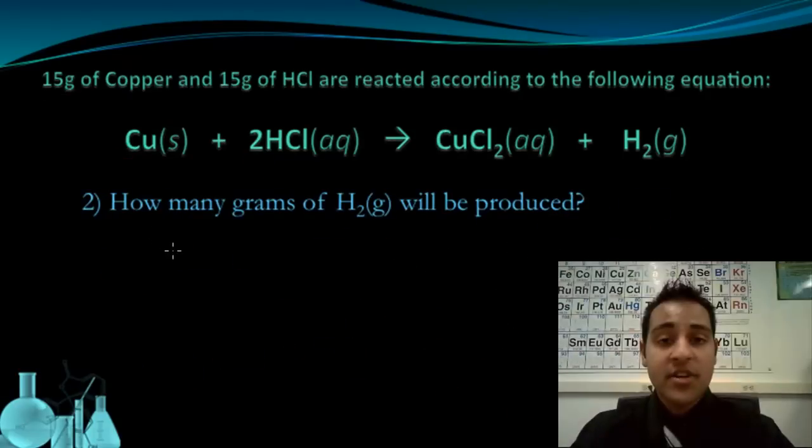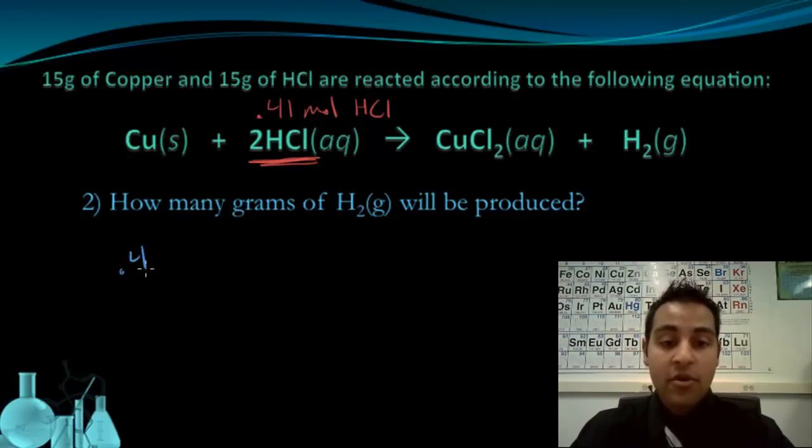The second question asks how many grams of hydrogen gas will be produced. Well, everything is going to be based off of my limiting reagent. So everything is based off of the hydrochloric acid because that's what's limiting the reaction. And I know that I have 0.41 moles of hydrochloric acid. We figured that out in the first problem. Once you've identified the limiting reactant, or the limiting reagent, this is a fairly straightforward stoichiometric process. So I have 0.41 moles of HCl.